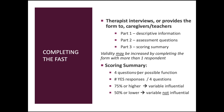For scoring: there are four questions per function, and you calculate the number of questions the respondent answered yes, divided by four. Two out of four would be 50%. Scores of 75% or higher indicate that a particular variable or function may be influential. Scores of 50% or lower suggest it may not be influential.